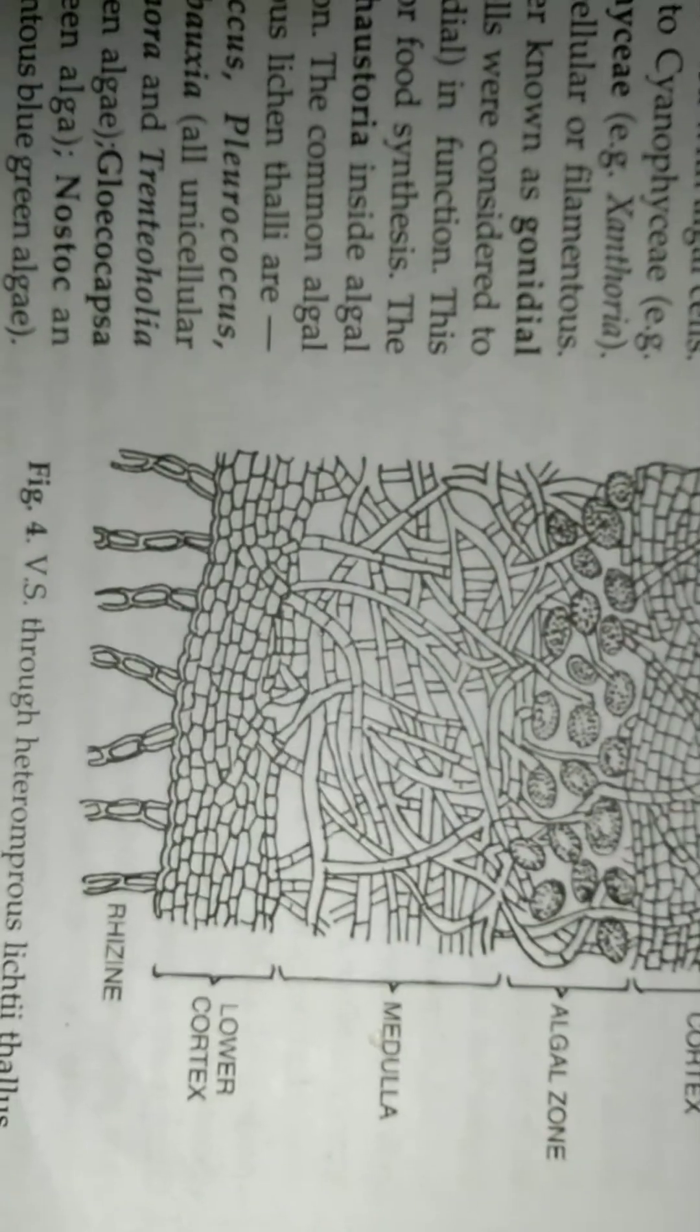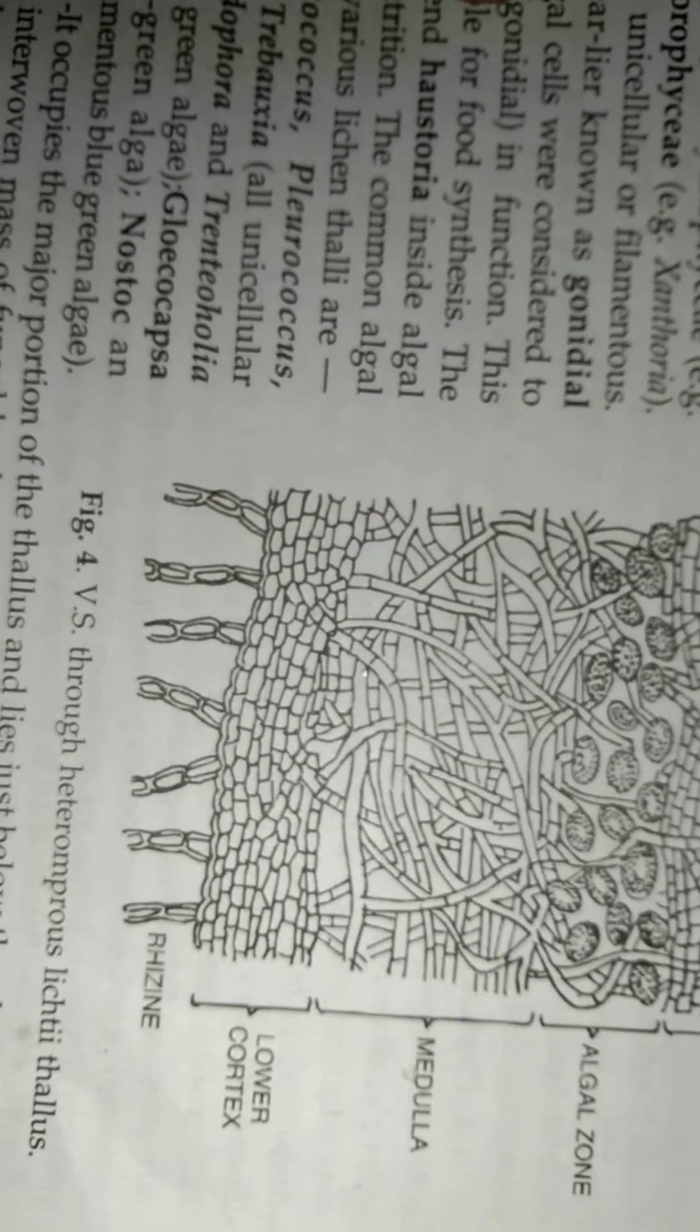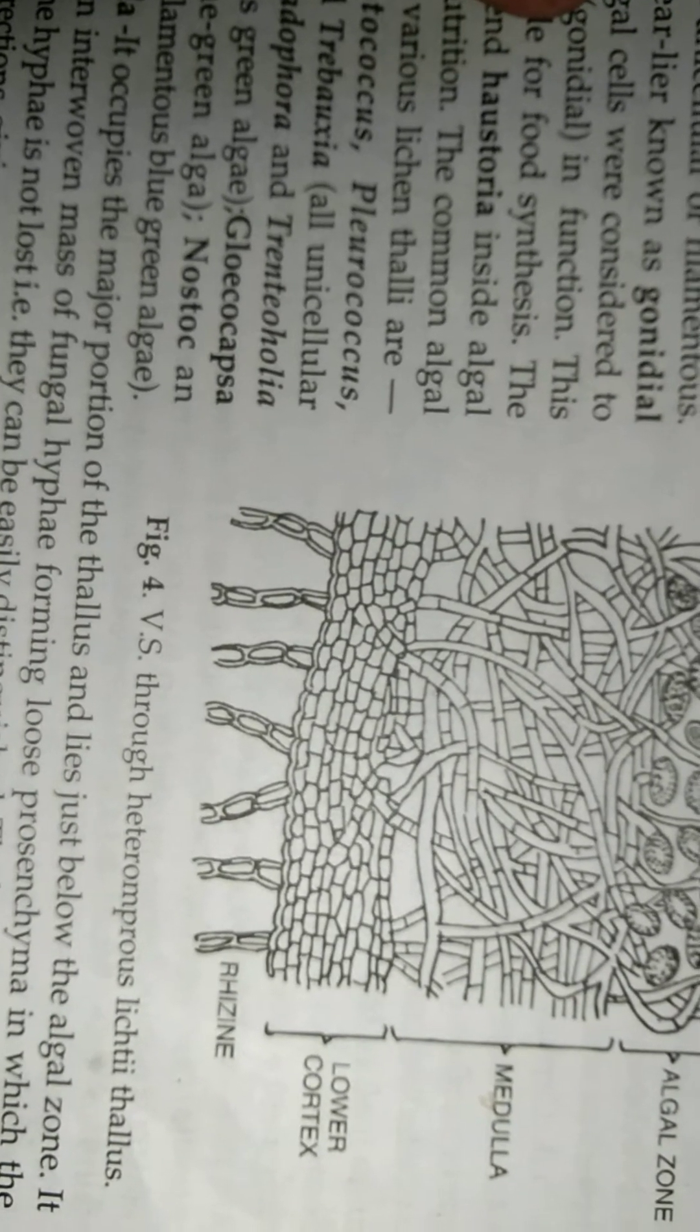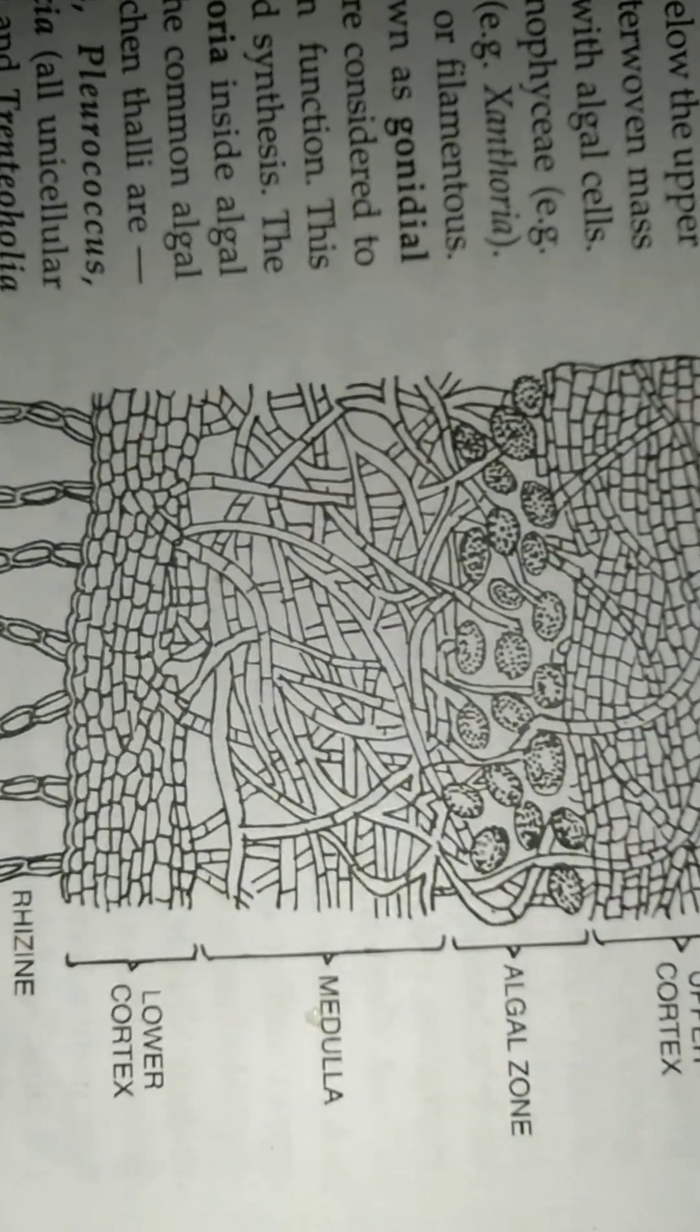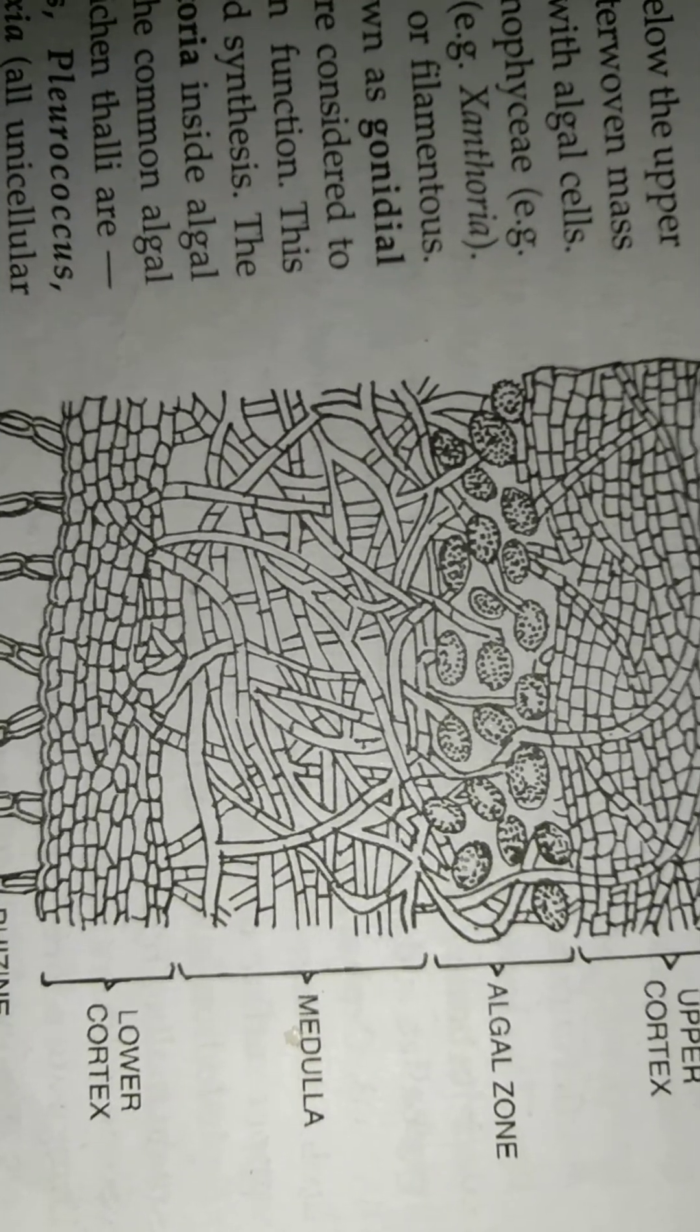The fungal hyphae is more or less at the angle to the surface of the thallus forming a tissue-like structure. The fungal hyphae are either without intercellular spaces, or if present, space is filled with gelatinous material. This is the upper cortex.